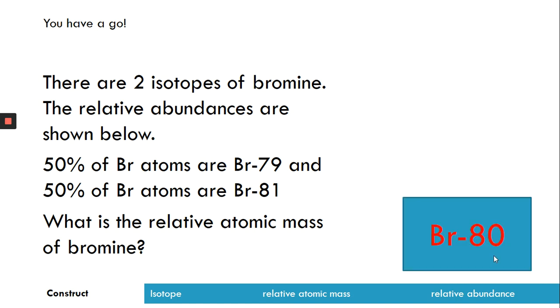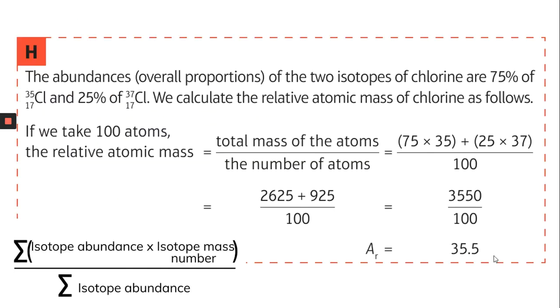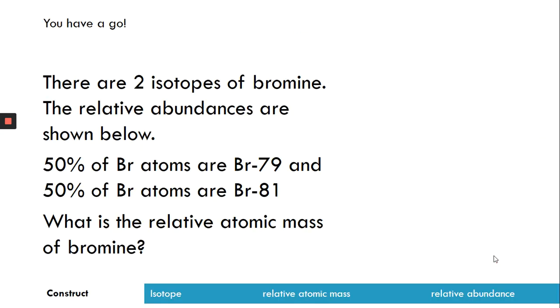And that works out as being bromine-80. So if we use our formula, then it would be 50, so the isotope abundance times by the isotope mass number. So 50 times by 79 in brackets, plus 50 times by 81 in brackets, and you divide it by 100. The total abundance is going to be 100%, so divide by 100. And as we said, that gives us 80. So the relative atomic mass of bromine is going to be 80.